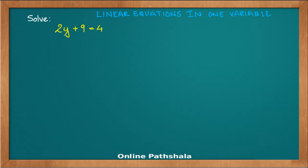It says solve 2y plus 9 is equal to 4. Now how do we proceed? The fundamental idea is to isolate the variable y so that we get y is equal to something, which gives us the solution.